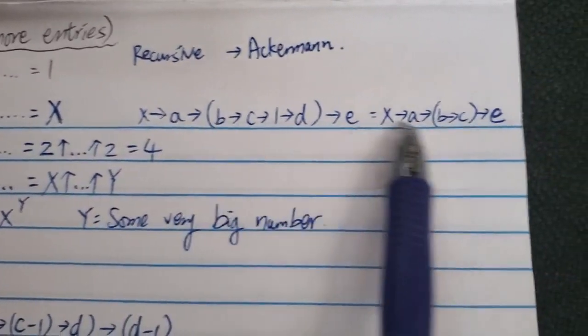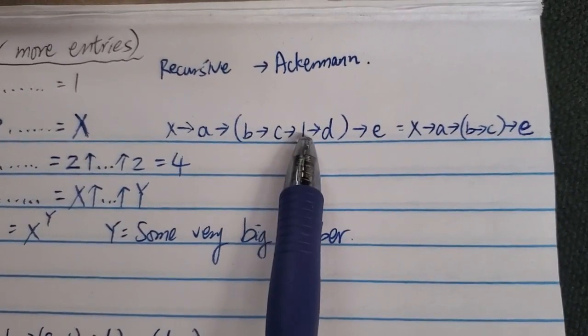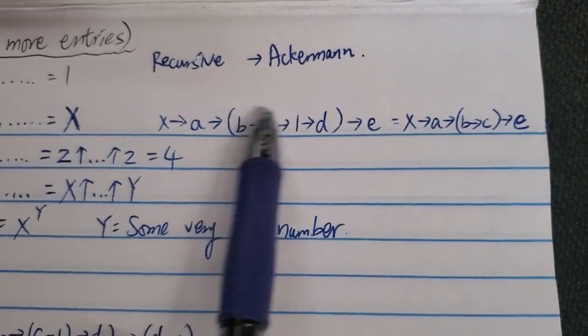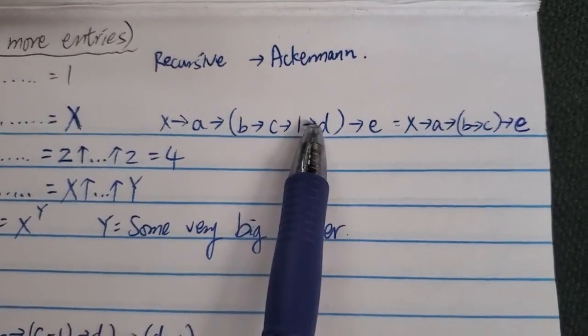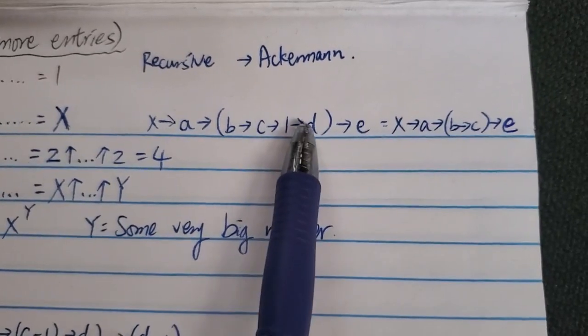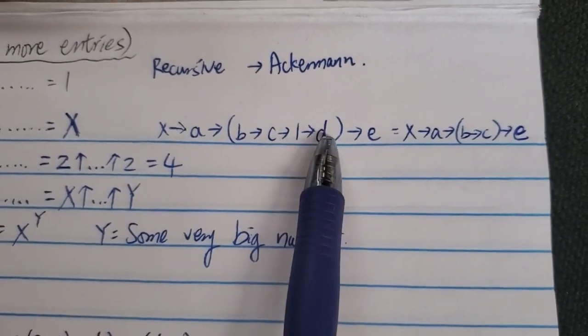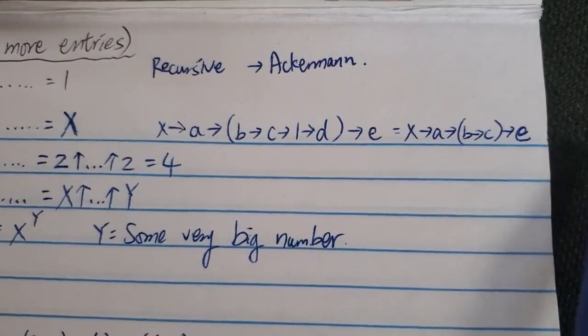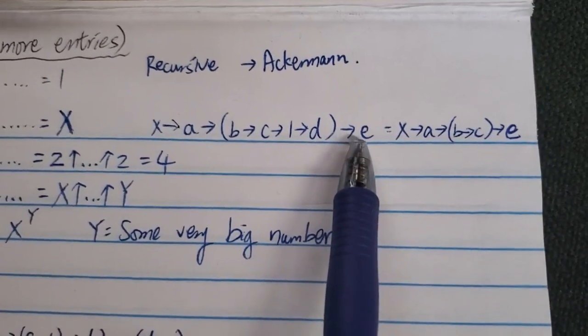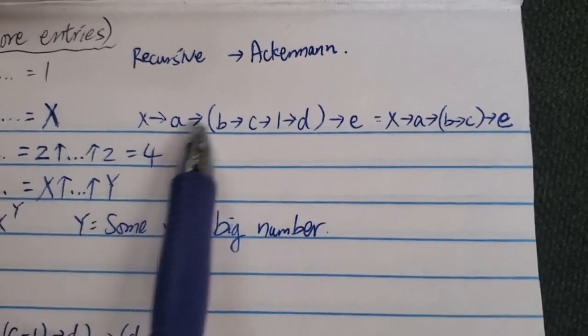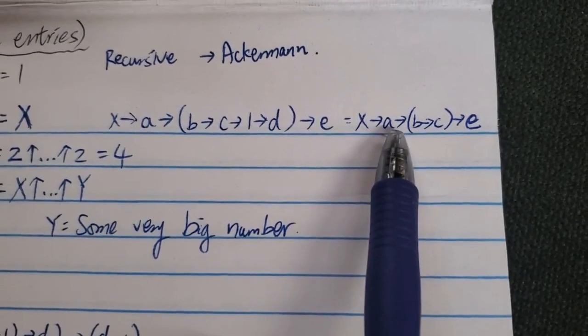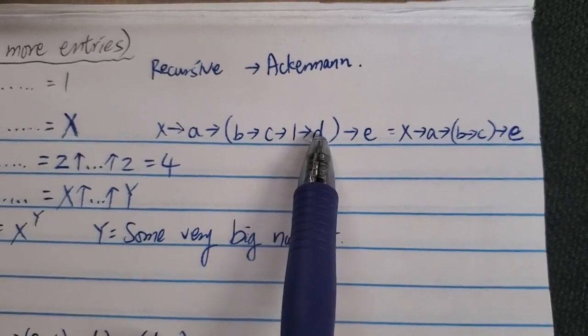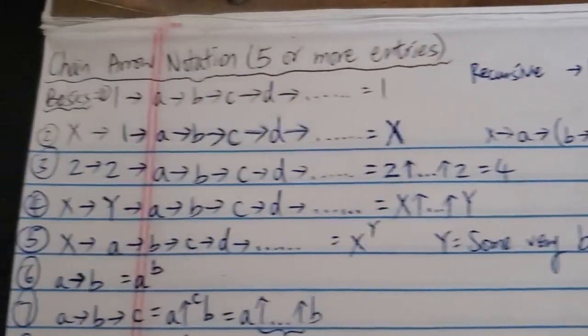However, the exception is this thing over here. If the one is inside part of a bracket, then it only works within the bracket. So only 1 and D is ignored. Everything outside the bracket, it doesn't affect it. So you cannot ignore the E over here. So if this thing over here, it just equals to X→A→B→C→E. So you just ignore 1 and D. You don't ignore the thing outside of the bracket.